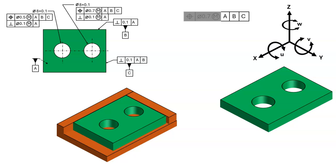While datum features A and B are making maximum contact with simulated datums A and B, the part is slid up against simulated datum C. This will constrain translation X. Now all six degrees of freedom are constrained.